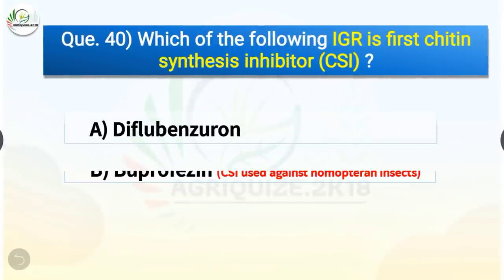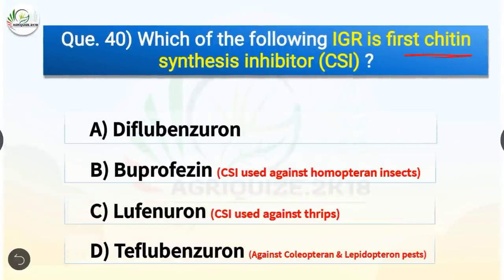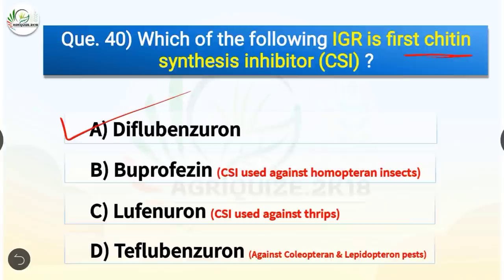Question number 40. Which of the following IGRs is the first chitin synthesis inhibitor? The options are diflubenzuron, buprofezin, lufenuron, or teflubenzuron. The correct answer is option A, diflubenzuron. Diflubenzuron is the first chitin synthesis inhibitor. The chitin synthesis inhibitor used against homopteran insects is buprofezin, and against thrips it is lufenuron.